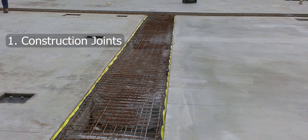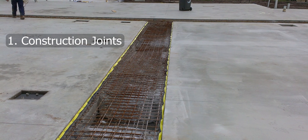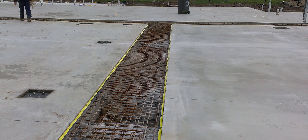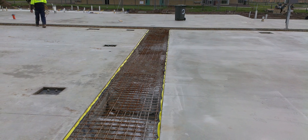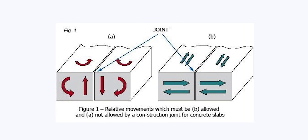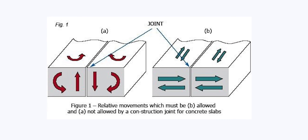First, let us discuss construction joints. On many jobs there will be starting and stopping points — you won't pour the entire slab all at once. That's where you will place a construction joint. Construction joints must be designed to allow displacements between both sides of the slab, meaning the old slab and the new slab must allow displacements from both sides. They must transfer flexural stresses produced in the slab by external loads.